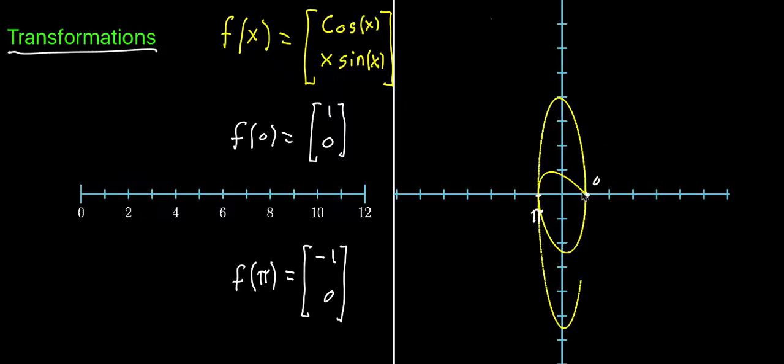But whereas in parametric plots you lose input information, here you can see where things move as you go from one to the other. In the next video, I'll talk about how you can interpret functions with a two-dimensional input and a two-dimensional output as a transformation.